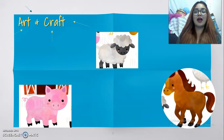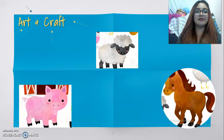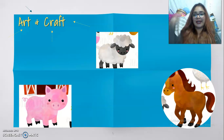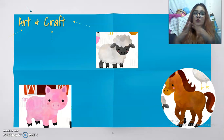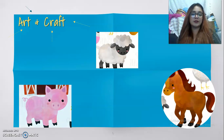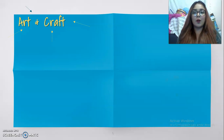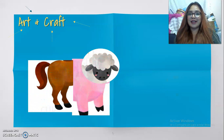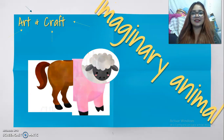Then, we have to cut the animals in different pieces — maybe the tail, the ears, the head, the legs, the body into parts. Because we're going to create a new animal. An imaginary animal.